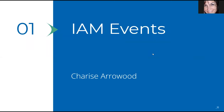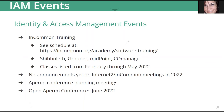IAM events. The first thing is the InCommon training provided by Internet2, which leads Shibboleth, Grouper, Midpoint, and Co-Manage training usually twice a year. The first classes are already confirmed, starting in February and ending in May, with another set starting in early fall through winter. Regarding conferences, Internet2 is still in meetings to decide timing. The Apereo conferences are in planning, targeting June 2022, with specific dates yet to come.